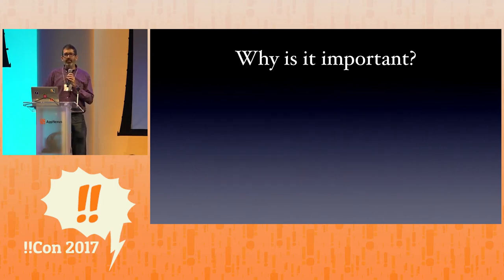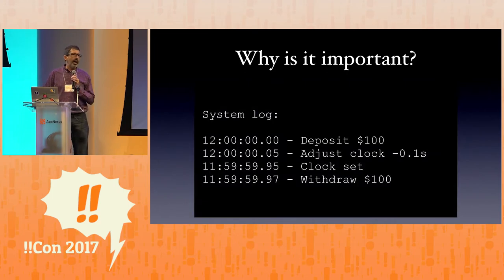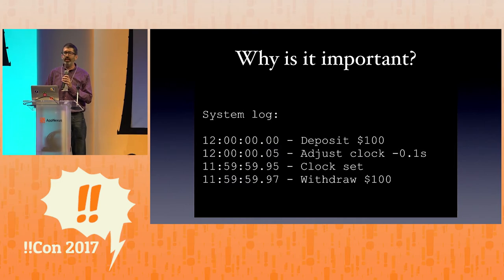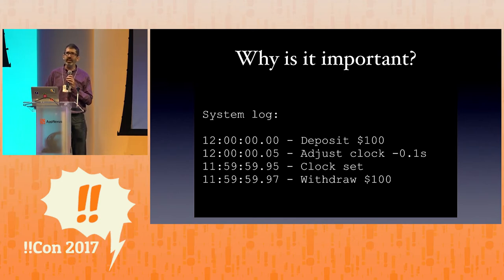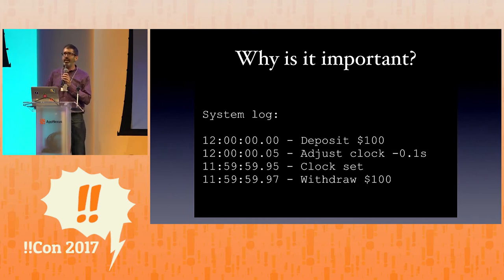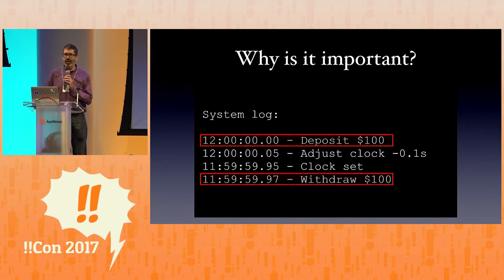So why is it important? The classic example is going to be like a bank transfer. I deposit some money into my account at 12 o'clock. Then some naive network time syncing protocol says adjust your clock back by a tenth of a second, which it does. And then I withdraw $100. Things happen in the correct order linearly, but if you look at the timestamp, I withdrew before I deposited. And depending on the implementation of the banking software, I'm going to be overdrawn. So that's bad.